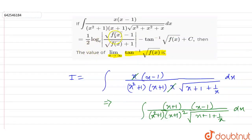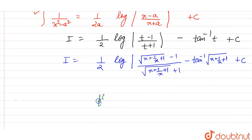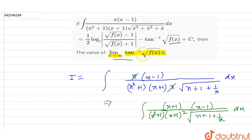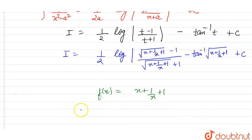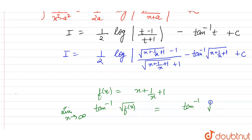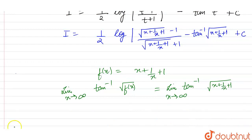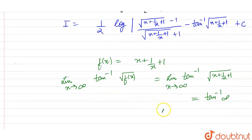So if we compare it with the question, we have f(x) is equal to the term inside the root, which is x plus 1 by x plus 1. So we have to find the limit as x tends to infinity of tan inverse of root f(x). This is equal to tan inverse of root of x plus 1 by x plus 1, as x tends to infinity. As x tends to infinity, this value is tan inverse of infinity, which equals pi by 2. So the final answer is pi by 2.